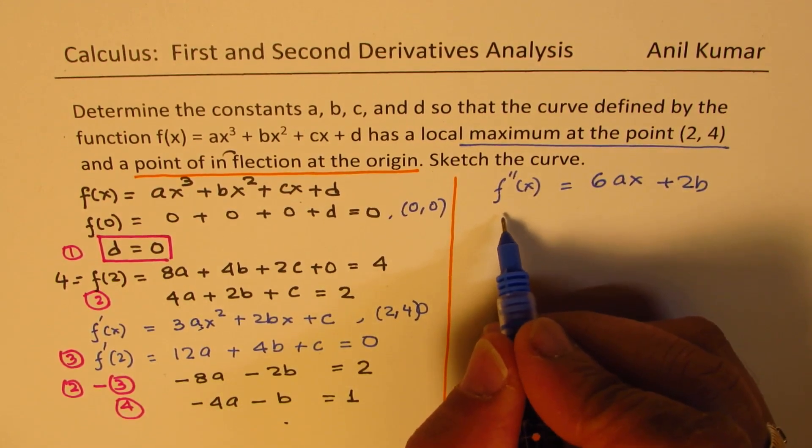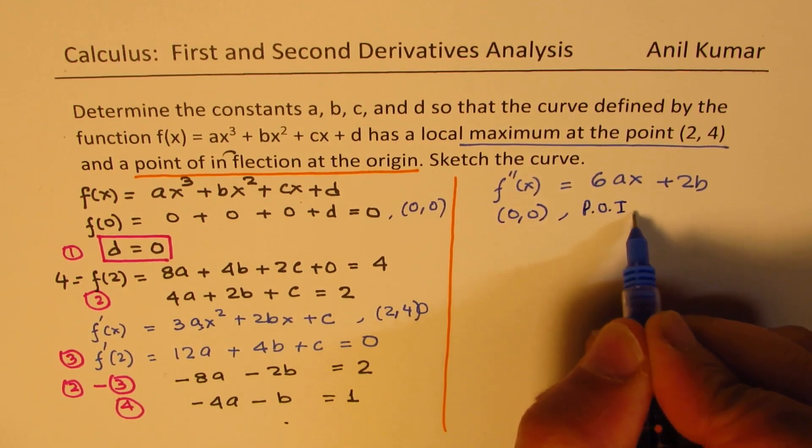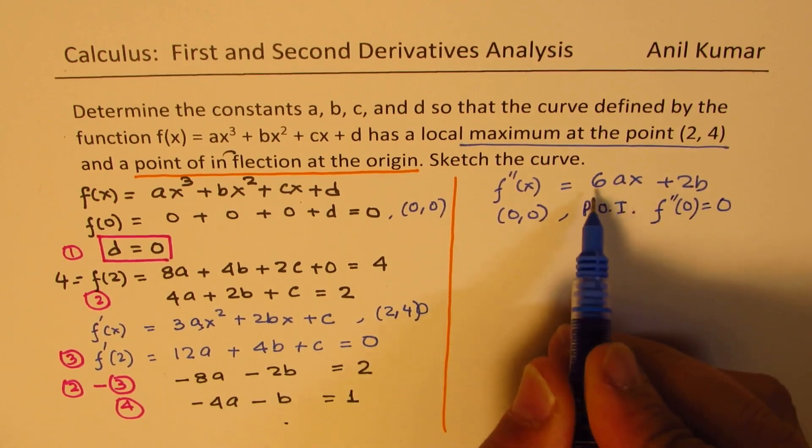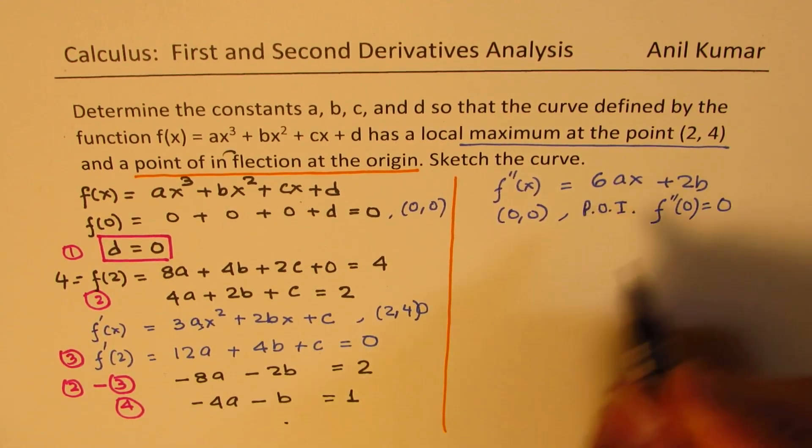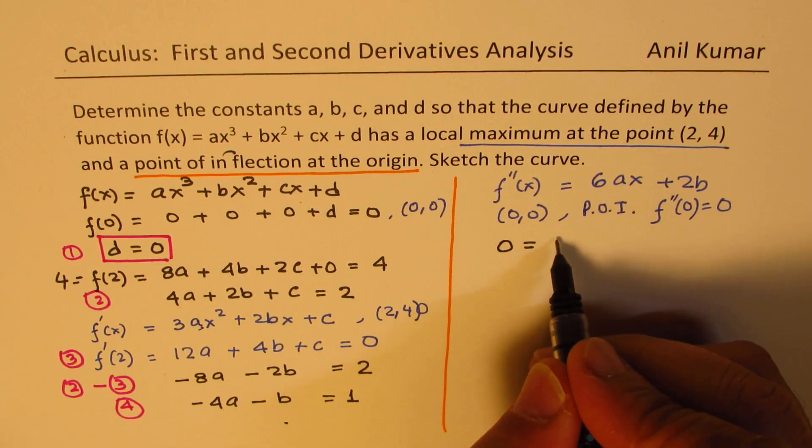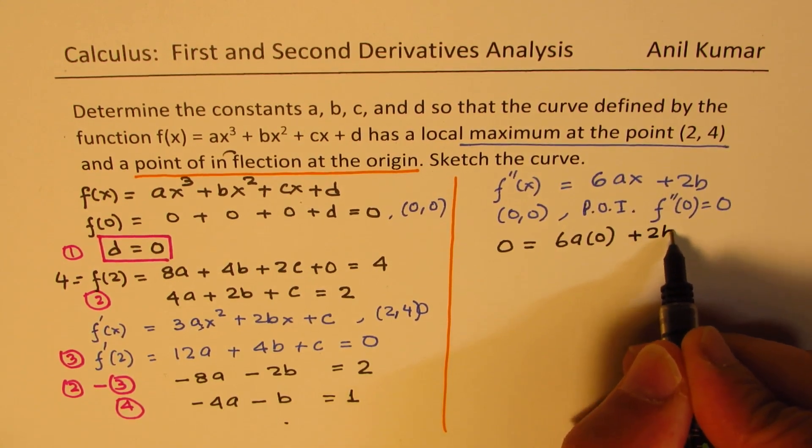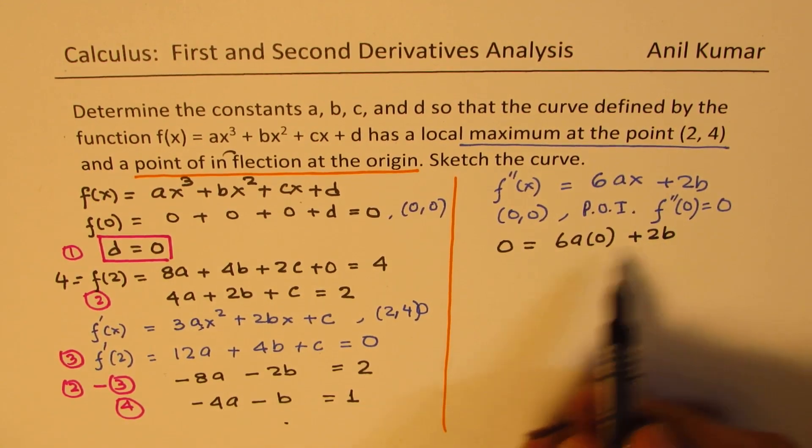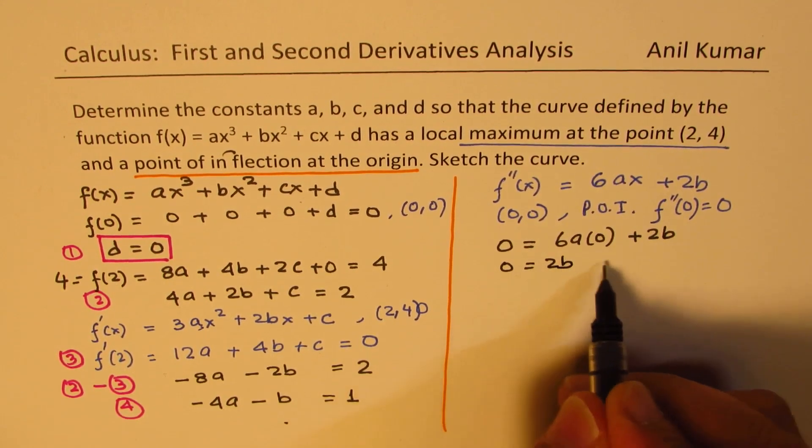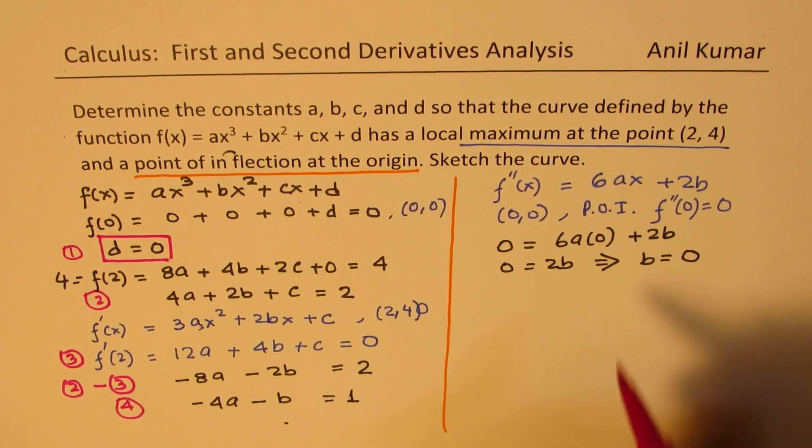Now, at origin, at x = 0, we have a point of inflection. That means f''(x), second derivative is 0. Equating that, what do we get? We get 0 equals to x is 0, so 6 × a × 0, which is 0, plus 2b. So that gives you clearly that 0 = 2b, or b = 0. So we get the value of b also as 0.